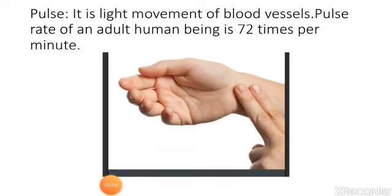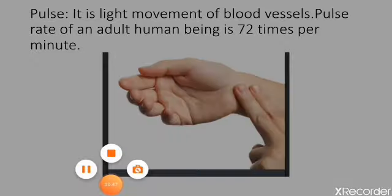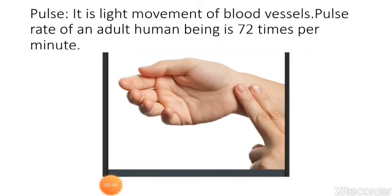You also can count your pulse rate. Just hold your wrist, just like showing in this picture and press under your thumb on your wrist. You will feel some rhythmic movement. Count it for one minute. That is your pulse rate. The average pulse rate of an adult is 72 times per minute.